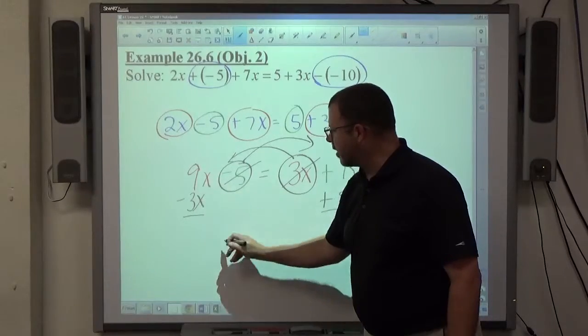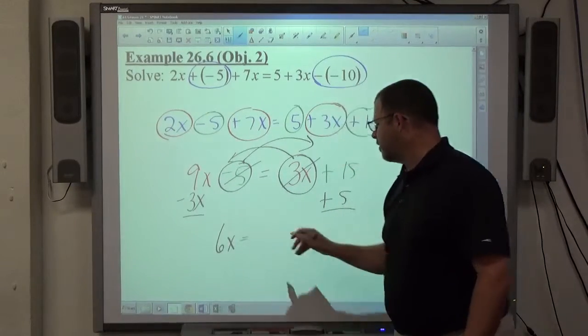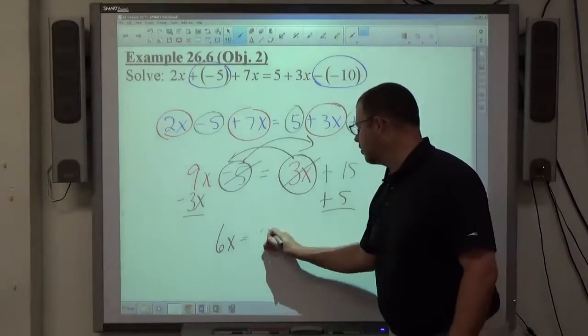That leaves me, for x terms, 9x minus 3x equals 6x. For constants, 15 plus 5 equals 20.